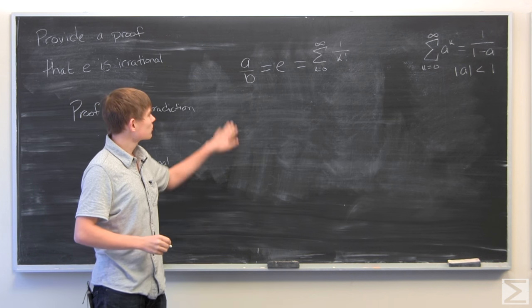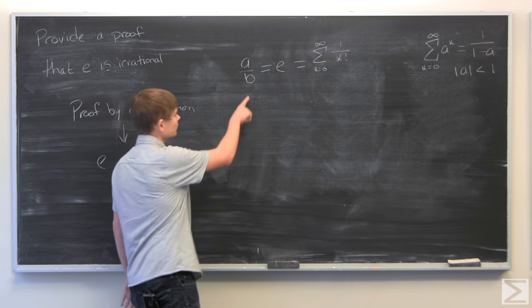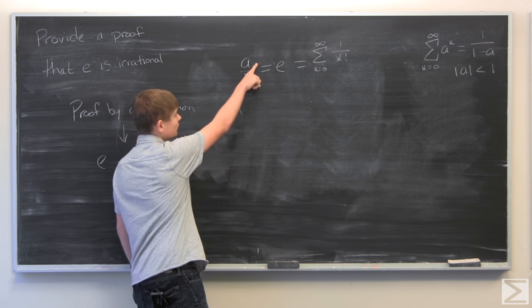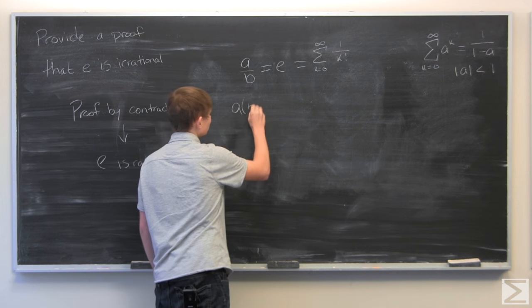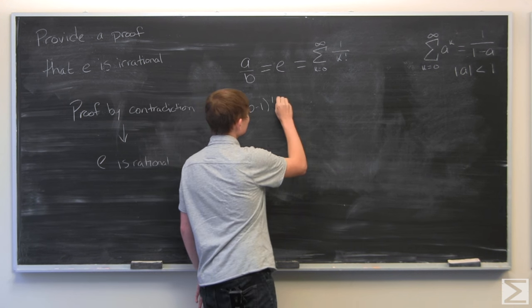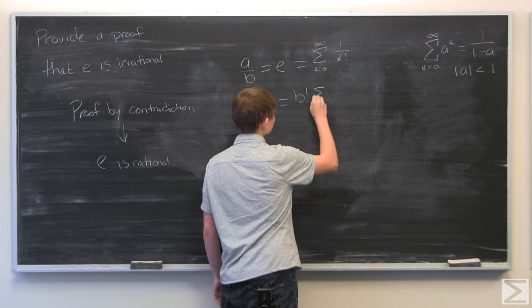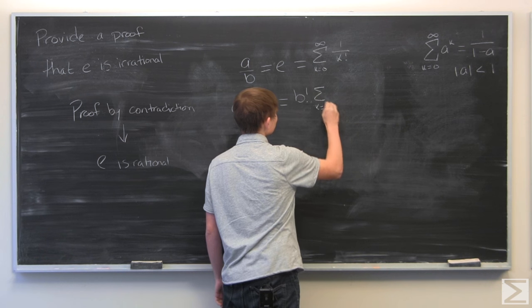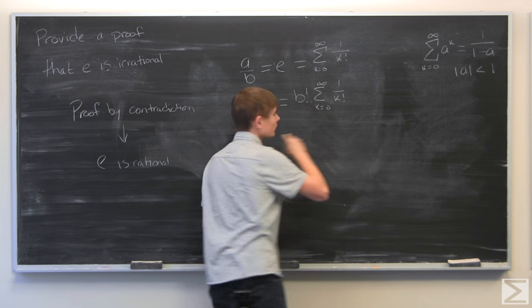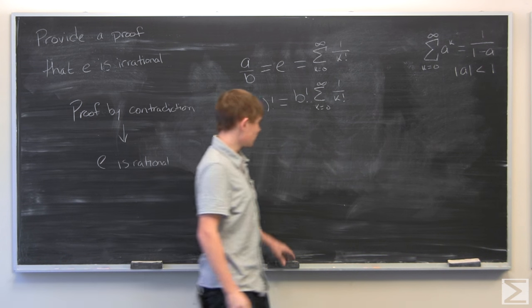And now what we're going to do is multiply both sides by B factorial. So, on the left-hand side, we're going to have B factorial over B, which is just B minus 1 factorial. And this is equal to B factorial times the power series. And what we can do is bring this B factorial inside the sum.